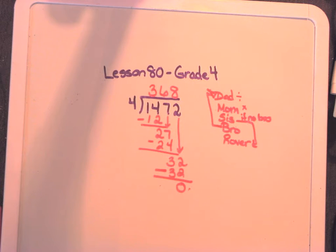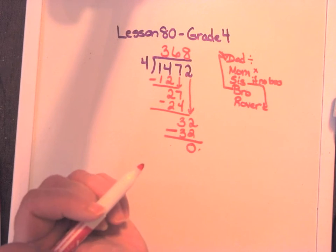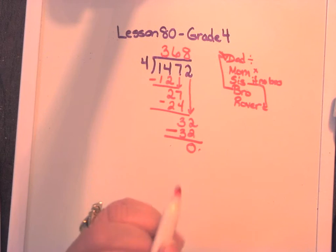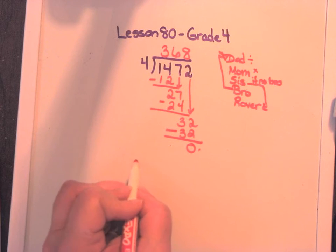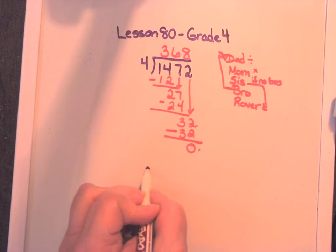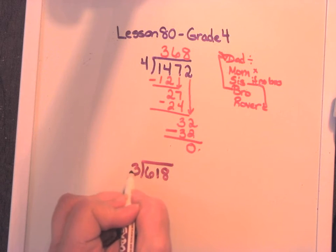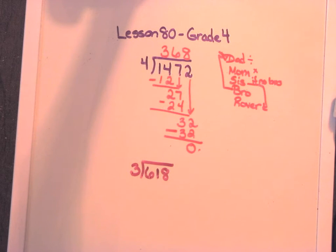Now I did one without the zero involved just to go over what we would normally see, what we've already seen in our assignments and in our work that we've done. But now let's take a look at one where we do end up having some type of zero involved. So let's take a look here and we'll do a different color so it doesn't run into the other one. Let's do 618 divided by three.